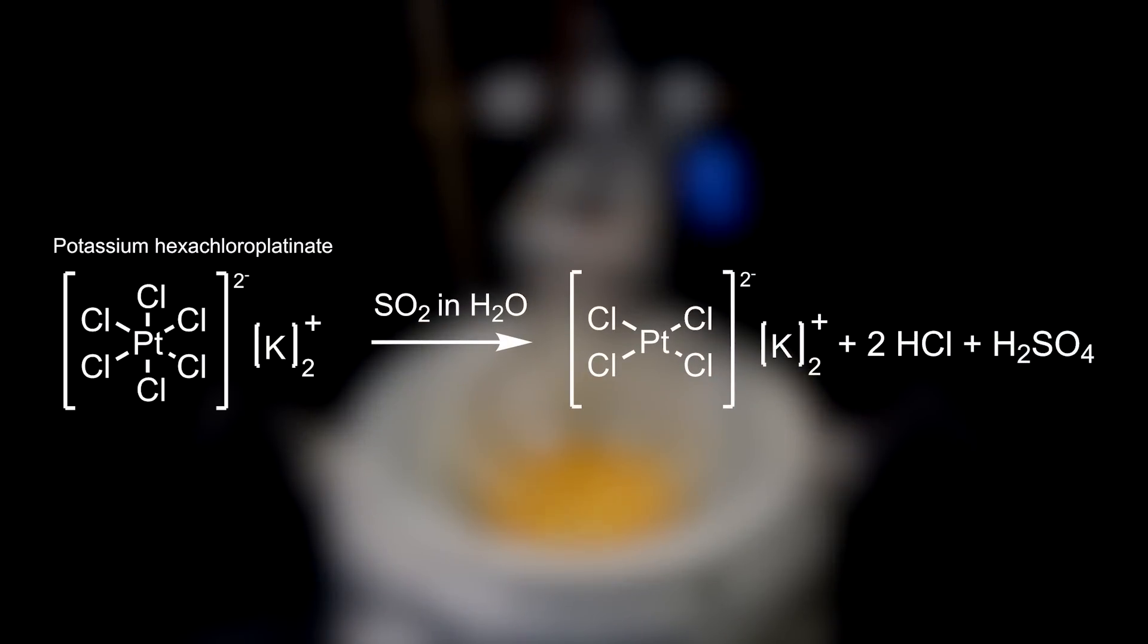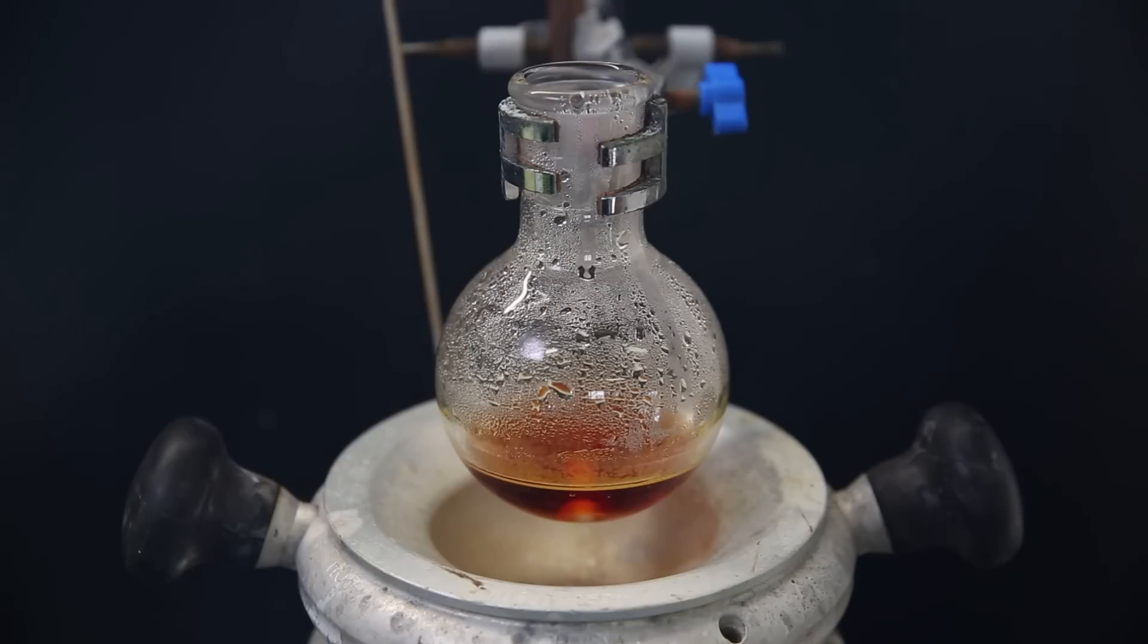In the reaction, sulfur dioxide and water, which in reality is in equilibrium with sulfurous acid by its reaction with water, reduces the hexachloroplatinate to tetrachloroplatinate. While the sulfur dioxide is oxidized to sulfuric acid, and the chlorine ions form hydrogen chloride.